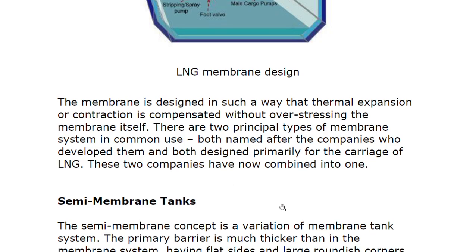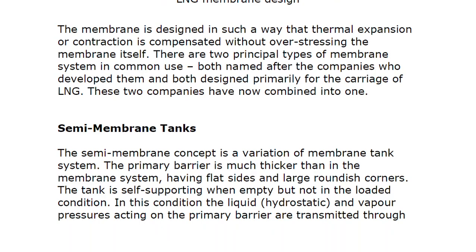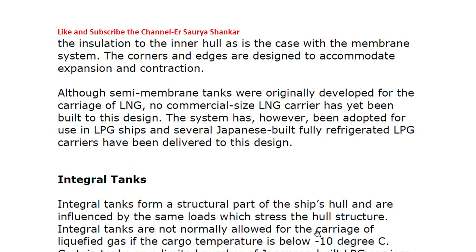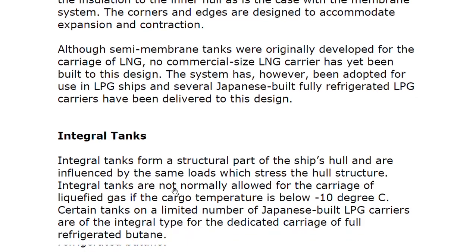The semi-membrane tank concept is a variation of the membrane tank system. The primary barrier is much thicker than in the membrane system, with flat sides and large rounded corners. The tank is self-supporting when empty but not under loaded conditions, where liquid and vapor pressure acting on the primary barrier are transmitted through insulation to the inner hull. Corner edges are designed to accommodate expansion and contraction. Although semi-membrane tanks were originally developed for LNG carriage, no commercial-size LNG carrier has been built to this design; however, the system has been adopted for LPG ships, and several Japanese-built fully refrigerated LPG carriers have been delivered using this design.